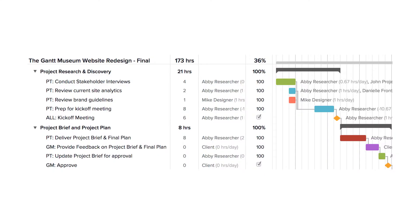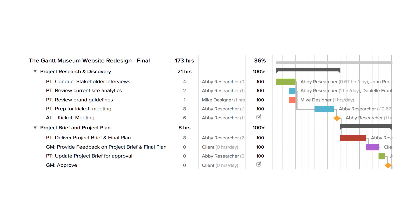You can also tag tasks to communicate high-level task ownership. This can be especially helpful if you work as an agency project manager who oversees client projects. In this example, the tags at the beginning of each task name clearly indicate who's responsible — GM for the Gantt Museum, or PT for the project team.